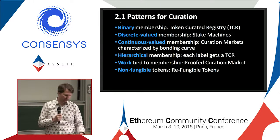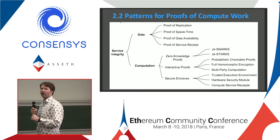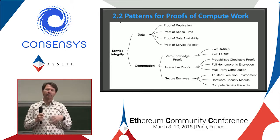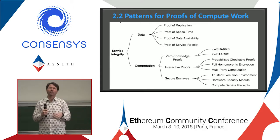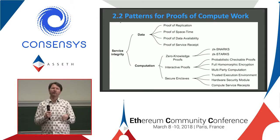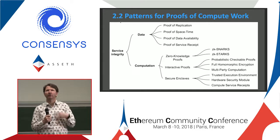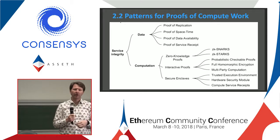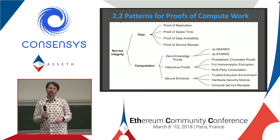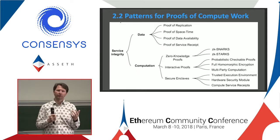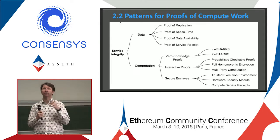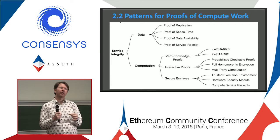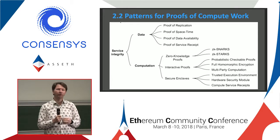There's also patterns for proofs of work. Within a subset of that, there's proofs of compute work. Subsets include work around data and work around computation itself. Within data, there's proof of space time — famous within Filecoin — but also proof of replication and proof of data availability, which is a subset of proof of space time. For computation, there are zero knowledge proofs — ZK-SNARKs, ZK-STARKs — or interactive proofs like homomorphic encryption. So there's a whole bunch of patterns out there, and it's really useful to have these in your toolbox when doing token design.